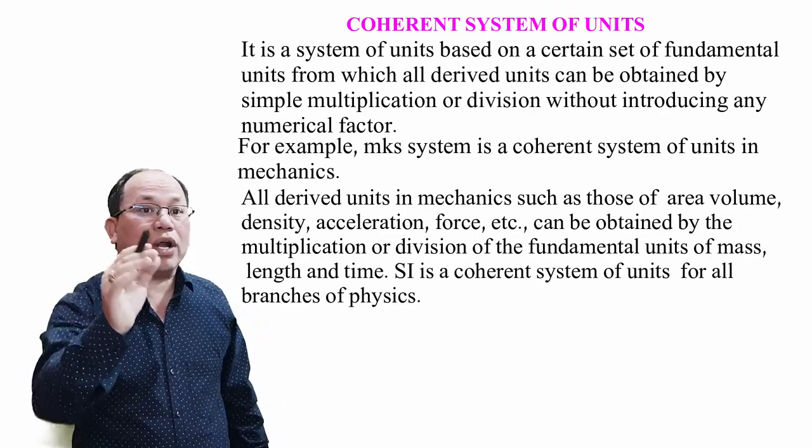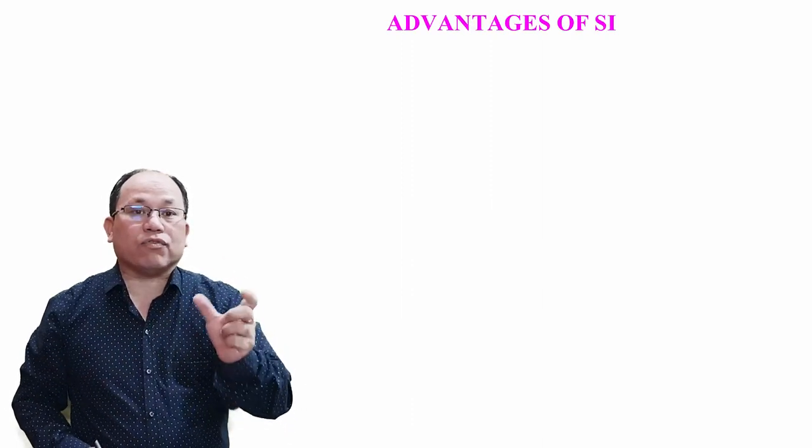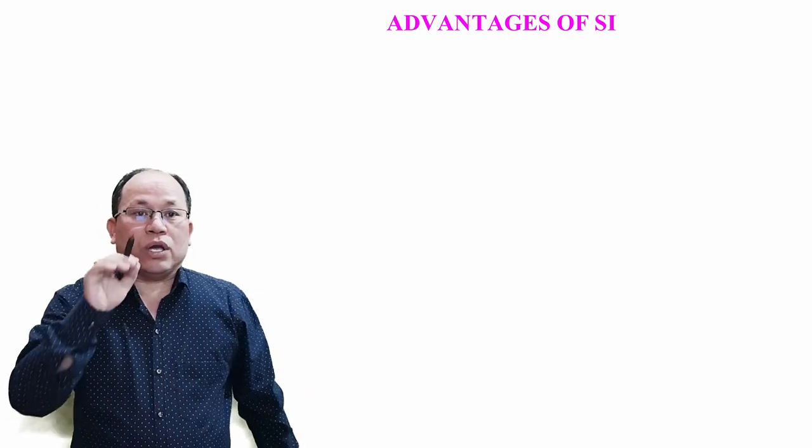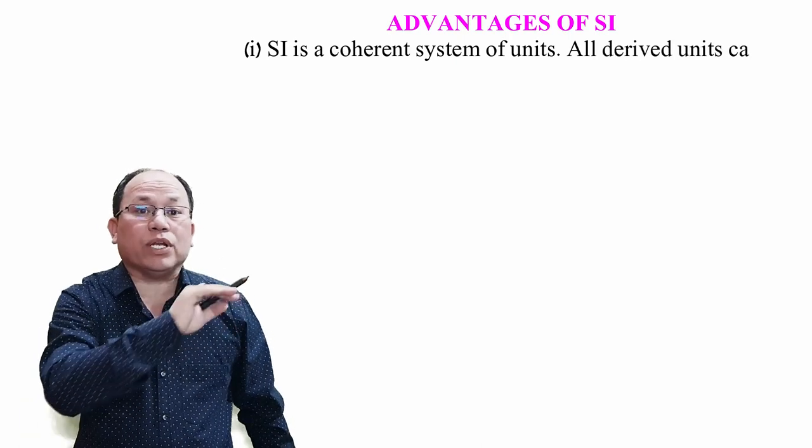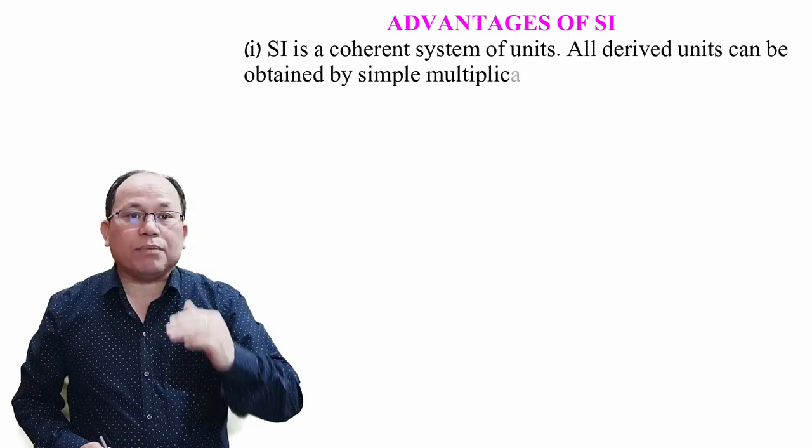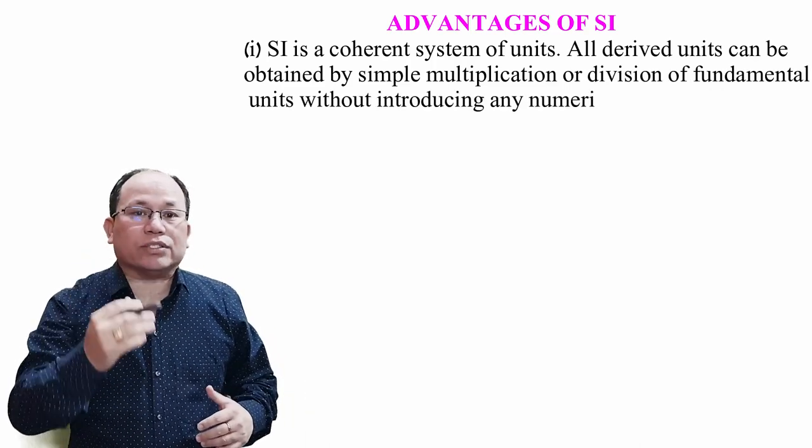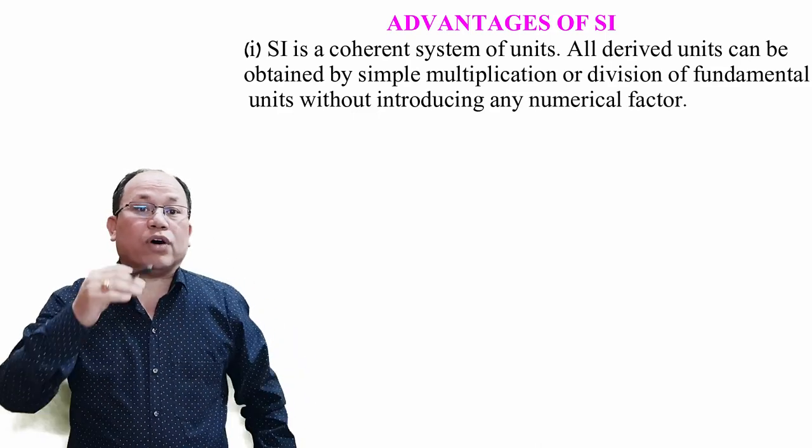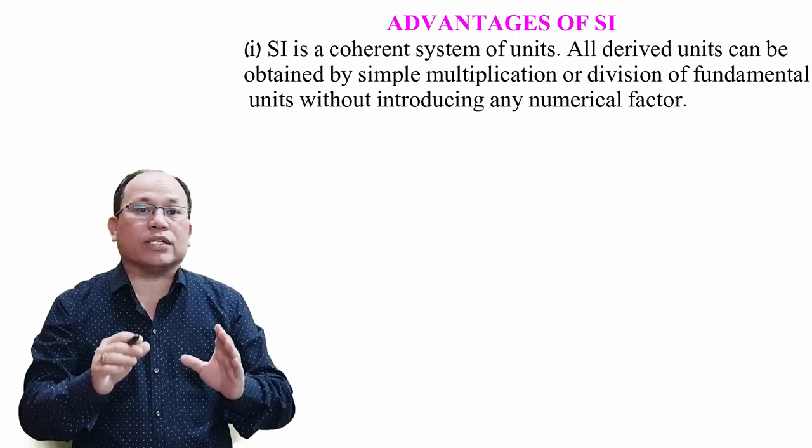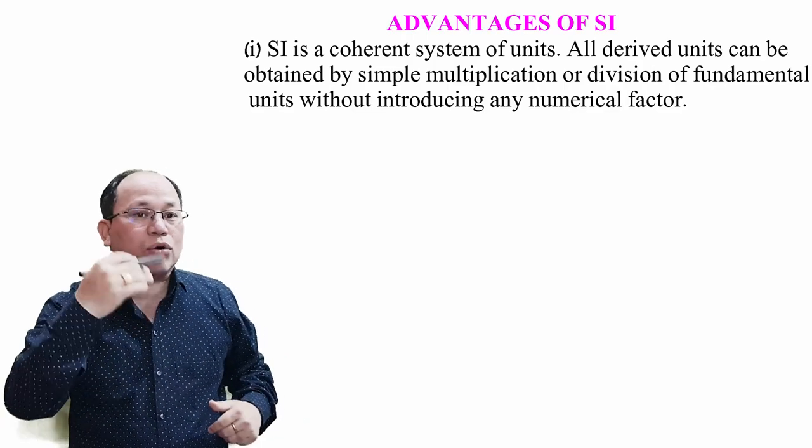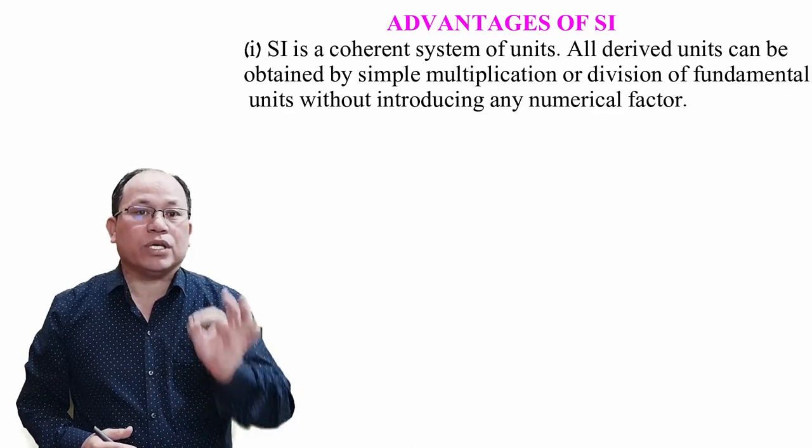These type of expressions are known as coherent system of units. So what are the advantages of SI? Let us come to the next topic. Advantages of SI, systemic international units. First point: SI is a coherent system of units. All derived units can be obtained by simple multiplication or division of fundamental units without introducing any numerical factors. This is why SI is also known as coherent system of units.